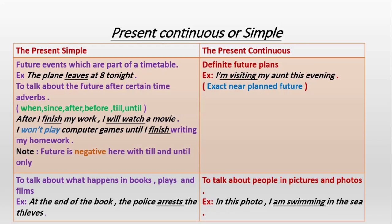The present continuous is used to show the future when the future is near, exact, planned, and accurate. For example: 'I'm visiting my aunt this evening' — grammatically correct, present continuous used as future. Note that when you use the present continuous to show a future action, you must include a future signal or future adverb like 'tomorrow,' 'next,' 'this evening,' 'this afternoon,' to show that the action hasn't started yet and will start in a short time. This future with the present continuous is exact, near, accurate, and planned.